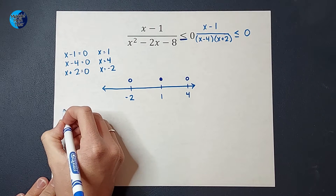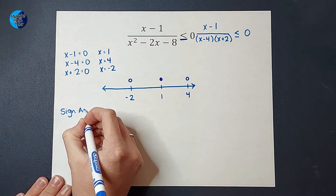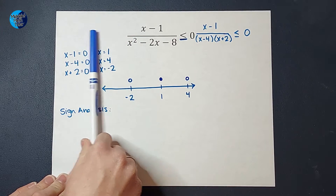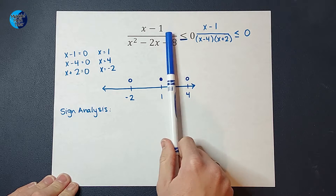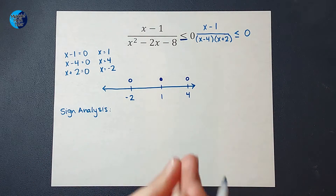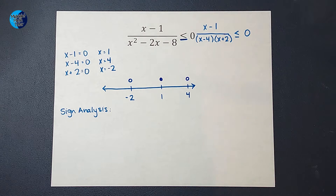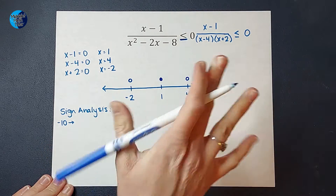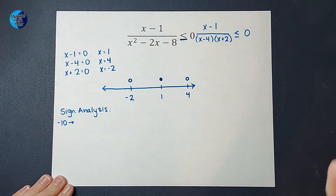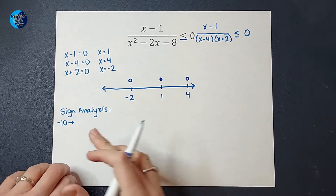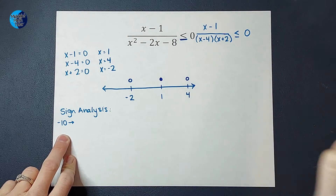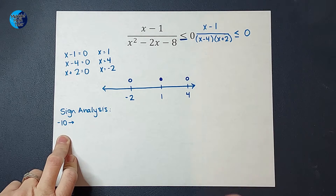From here, we are going to do what we affectionately call sign analysis. I want to know in each of the regions — to the left of negative 2, between these values, and to the right of 4 — are we dealing with positives or negatives? So I'm going to pick a number to the left of negative 2. Let's pick negative 10. The thing about sign analysis is I'm not really concerned about the exact number when I plug in negative 10 for x — I only care if it's positive or negative.